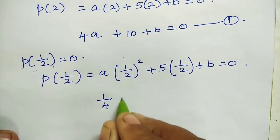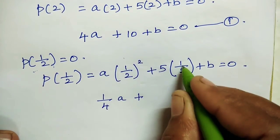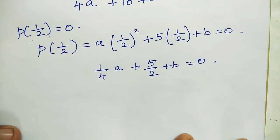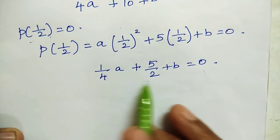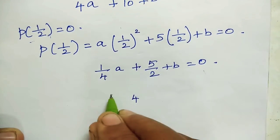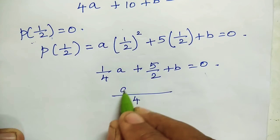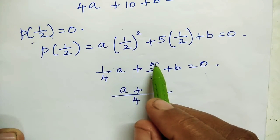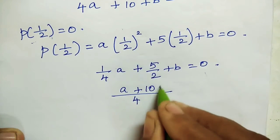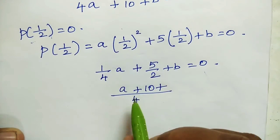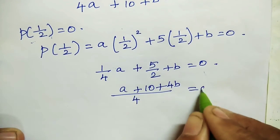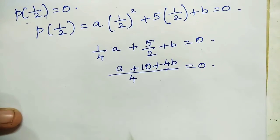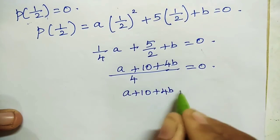This gives us (1/4)a plus 5/2 plus b equals 0. Multiplying through by 4, the LCM, we get a plus 10 plus 4b equals 0. This is our second equation.